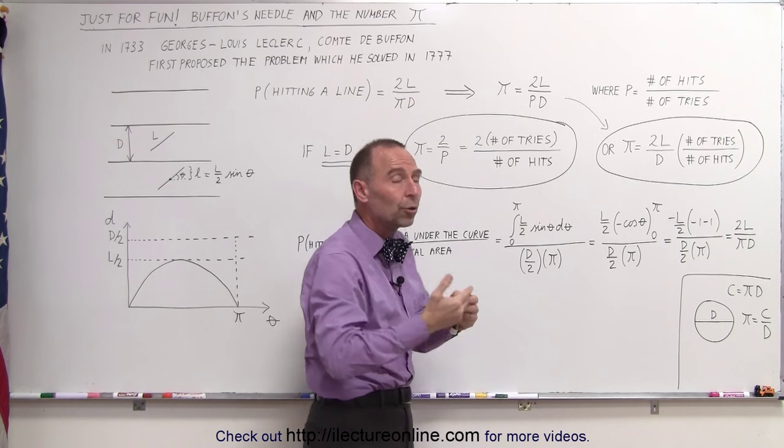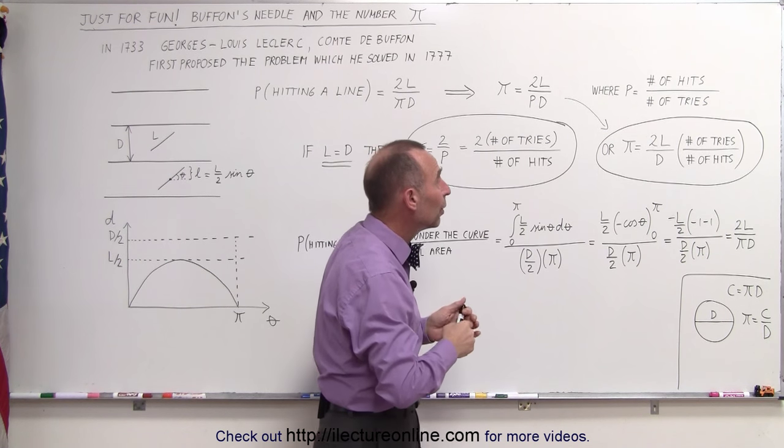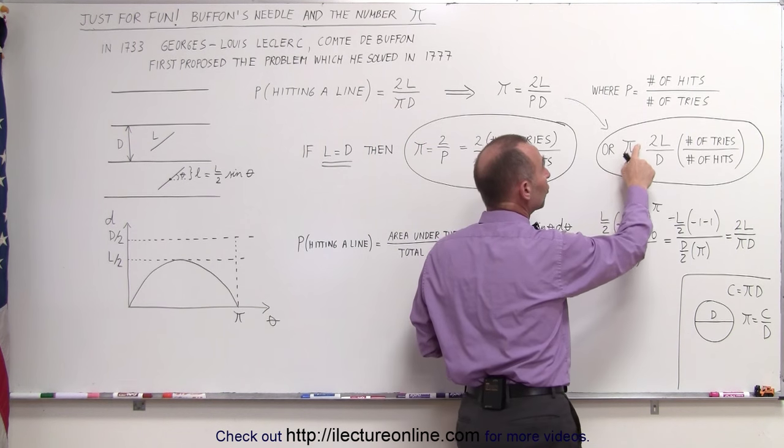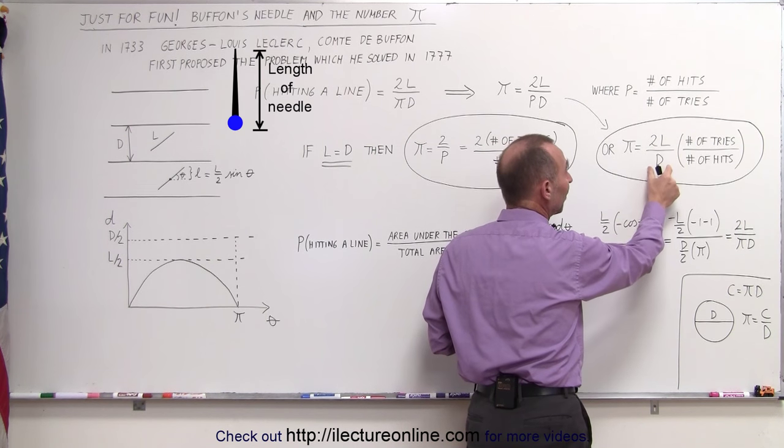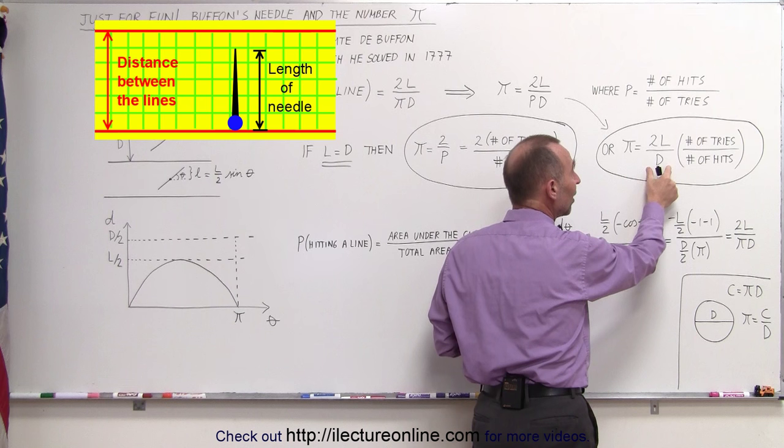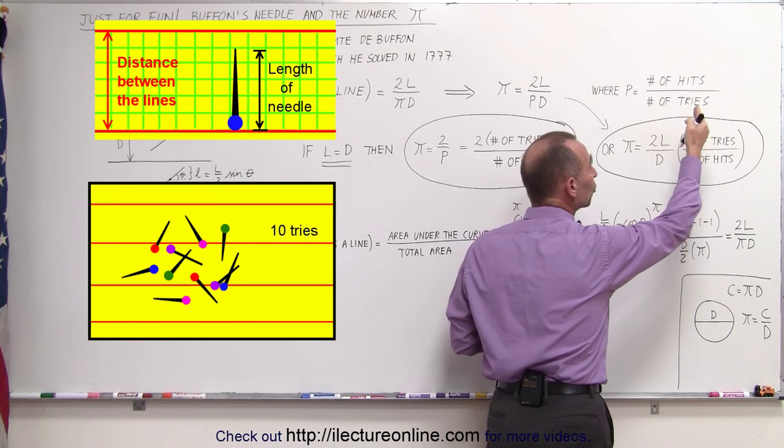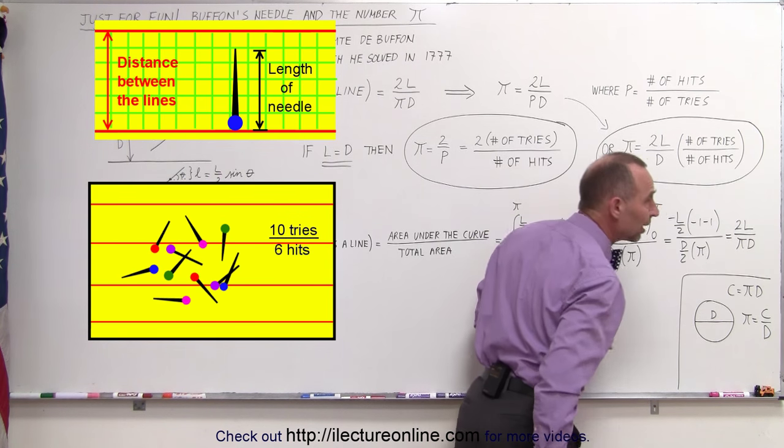Then relating that to the number of tries to the number of hits, we can say that pi can be written as 2 times the length of the needle divided by the distance between the lines, times the ratio of the number of tries divided by the number of hits.